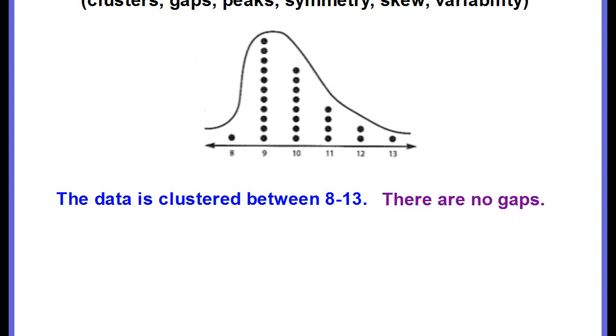Okay, what about peaks? Are there any peaks? Peaks are the ones that occur the most. They're the tallest. Think about a mountain peak, right? Well, the tallest would be at 9, and this is taller than any of the other ones. So this would be our peak. So there is a peak at 9.